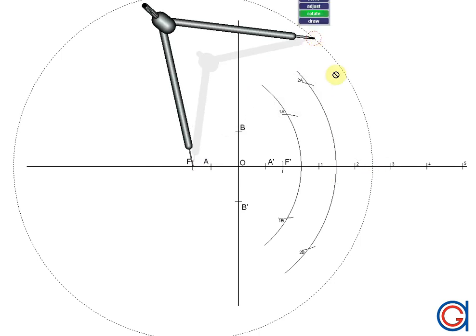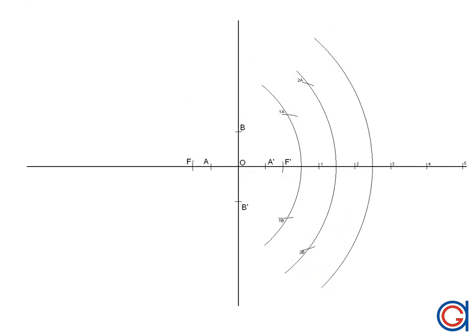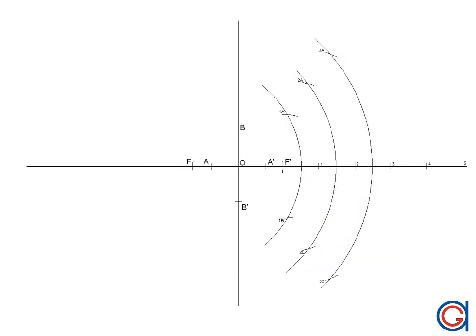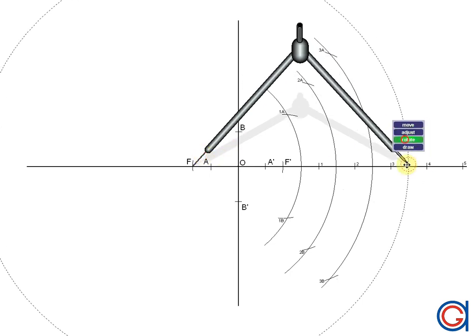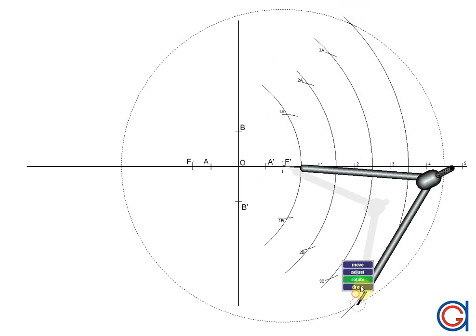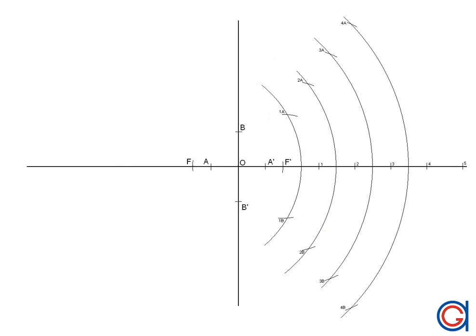We are going to repeat this process with all of the remaining points, speeding up the video. Setting the compass to a, p4 and setting the compass on f prime, we scribe a new arc. Now that we have all the points on the right branch of the hyperbola, we are going to locate the points for the left branch by following the same procedure using the same radii, but switching our center points: the large radii will now be centered on focal point f prime and the small radii on focal point f.